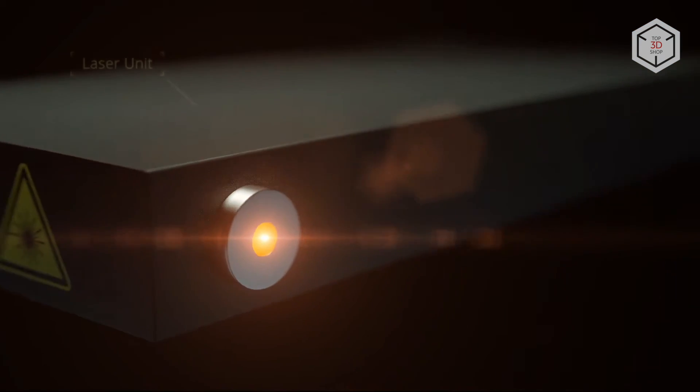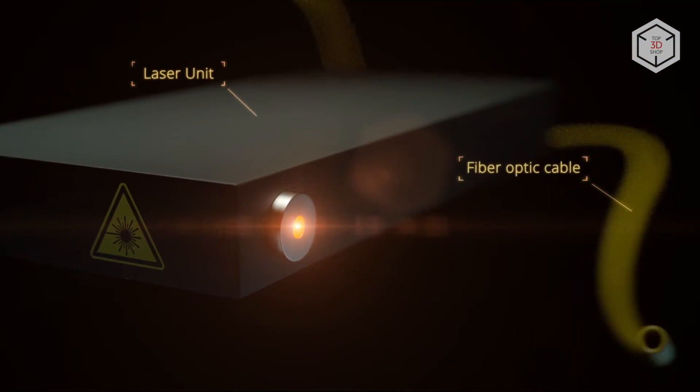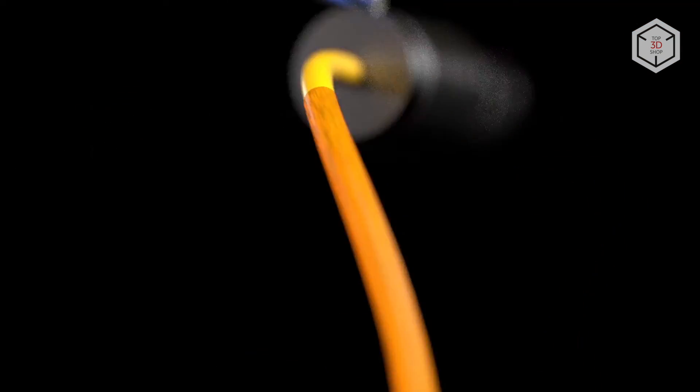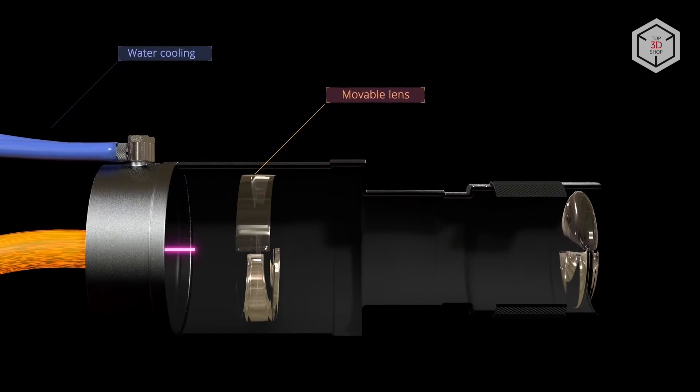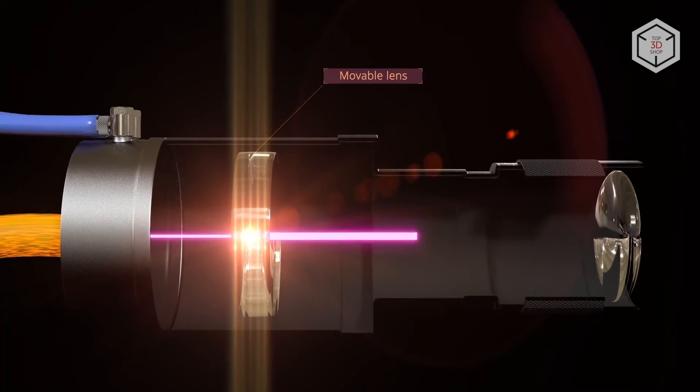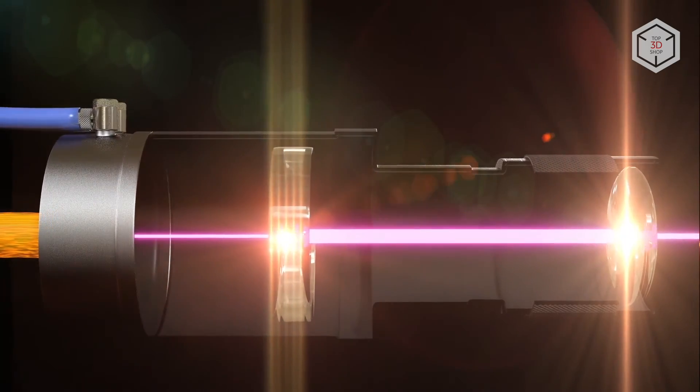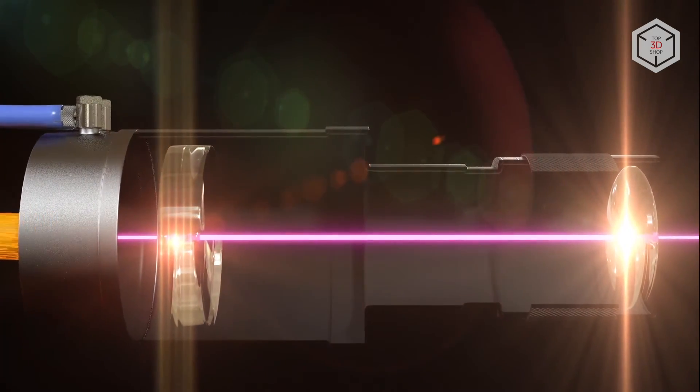Compact, budget-friendly SLM printers can be equipped with low-power lasers. Usually, the larger the size of the device, the more power and number of lasers it features. Some units are engineered with dozens of lasers, one kilowatt each. As a result, the efficiency and productivity grow significantly, but so does the cost of the machine.